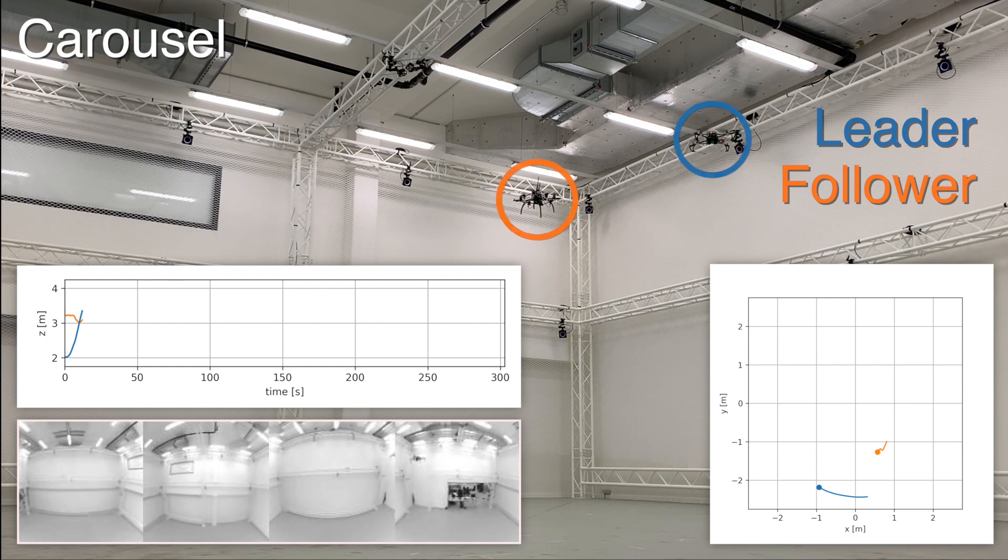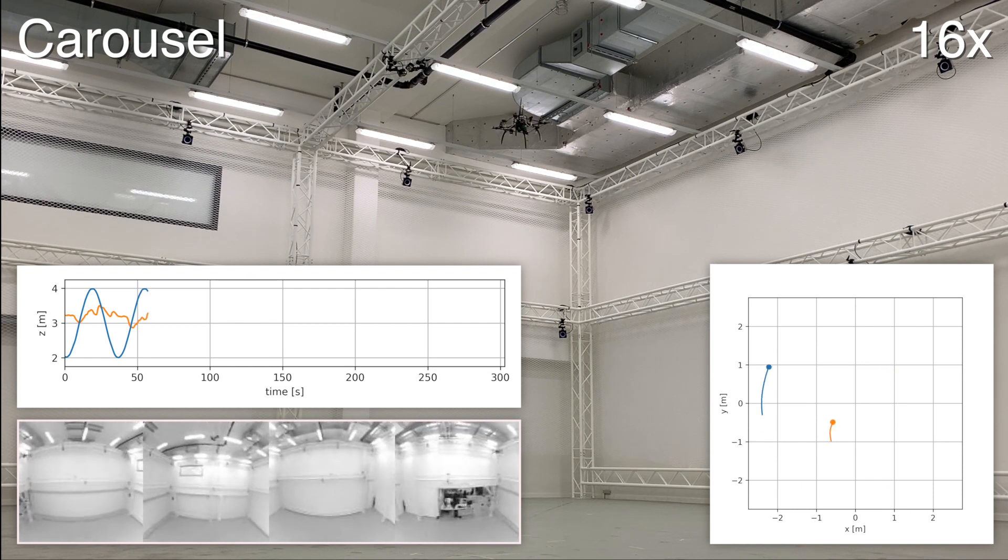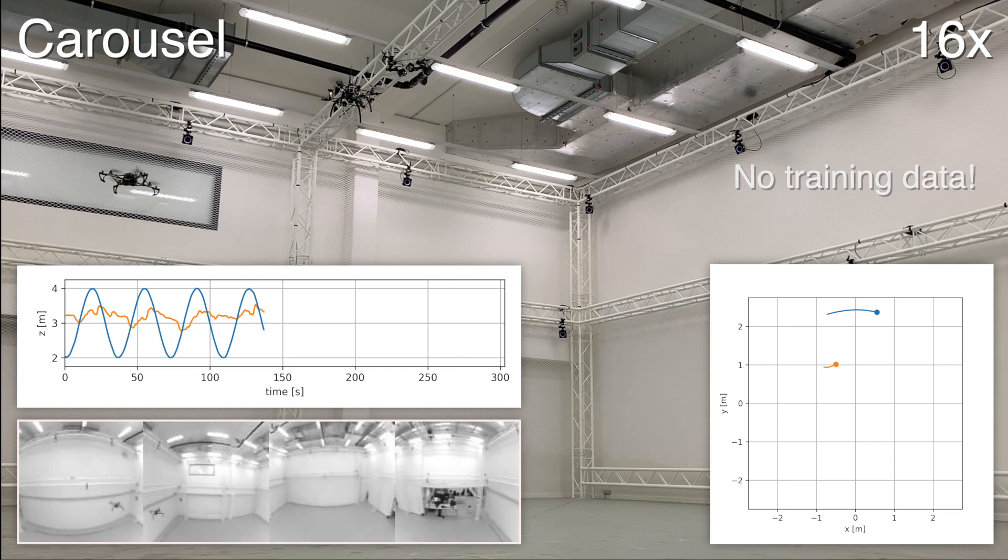The carousel scenario shows that the drone operates in full 3D space by modulating the altitude of the leading agent. Note that no training data was given for this specific scenario.